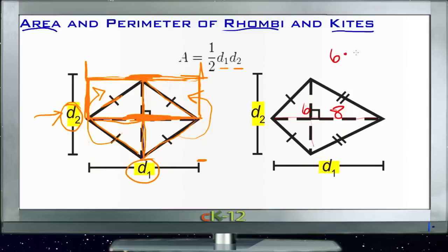then what we do is we take 6 times 8, so one diagonal times the other diagonal, that's 48, and we divide that answer by 2, and so our overall area for this particular kite down here would be 24.